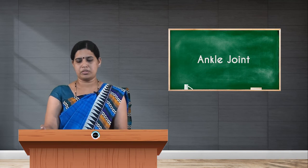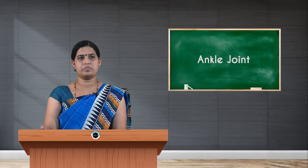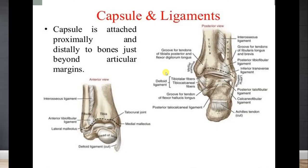The fibrous capsule attachment is seen at the articular margins of the joint. As seen in the picture, anteriorly and posteriorly it attaches to the lower ends of the articular surfaces, and below to the margins of the superior surface of the body of the talus. The inner lining of the fibrous capsule is called the synovial membrane.